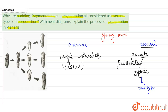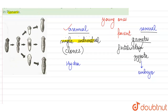Offspring in asexual reproduction are exactly identical, whereas in sexual reproduction, because two different parents are involved, we see a lot of variation. The processes listed here — budding, fragmentation, and regeneration — all involve a single individual reproducing. There are no two kinds of parents, so these processes are placed under asexual reproduction.